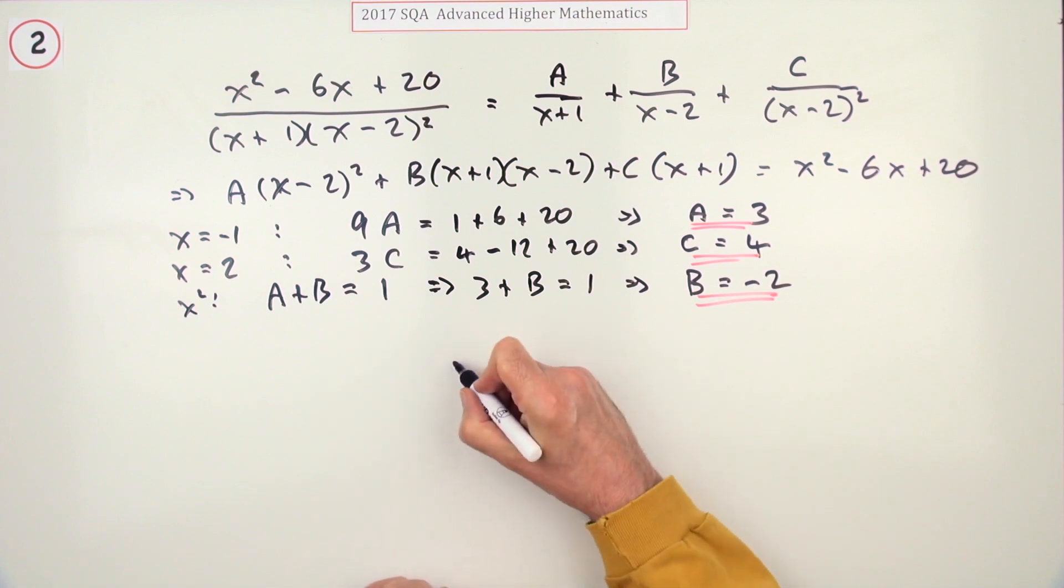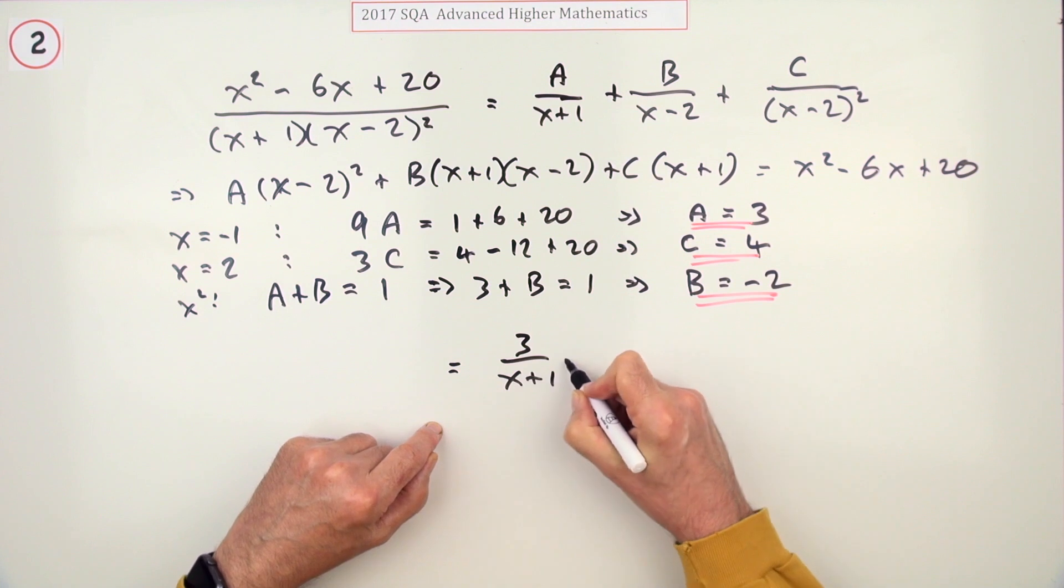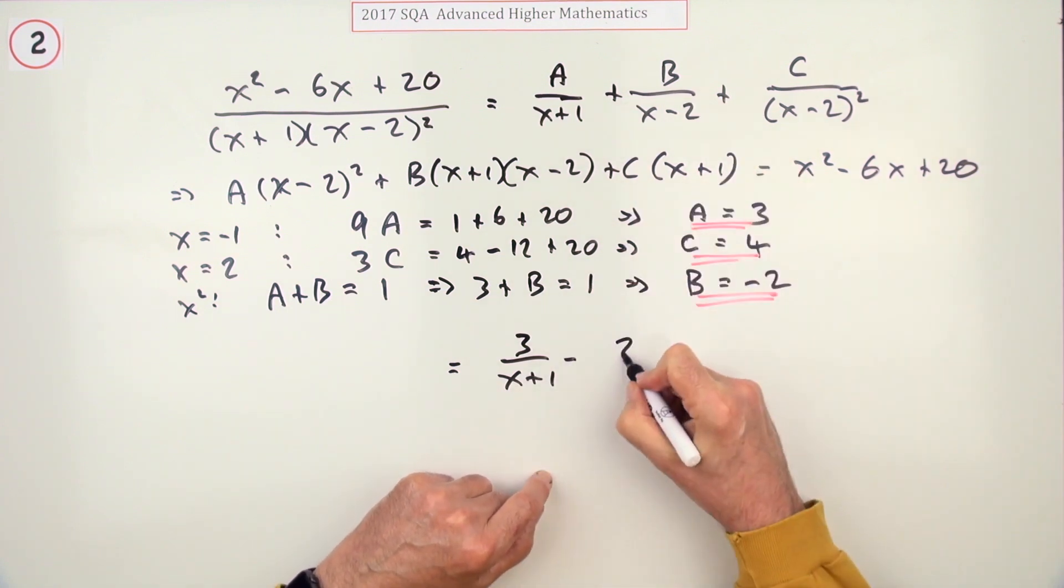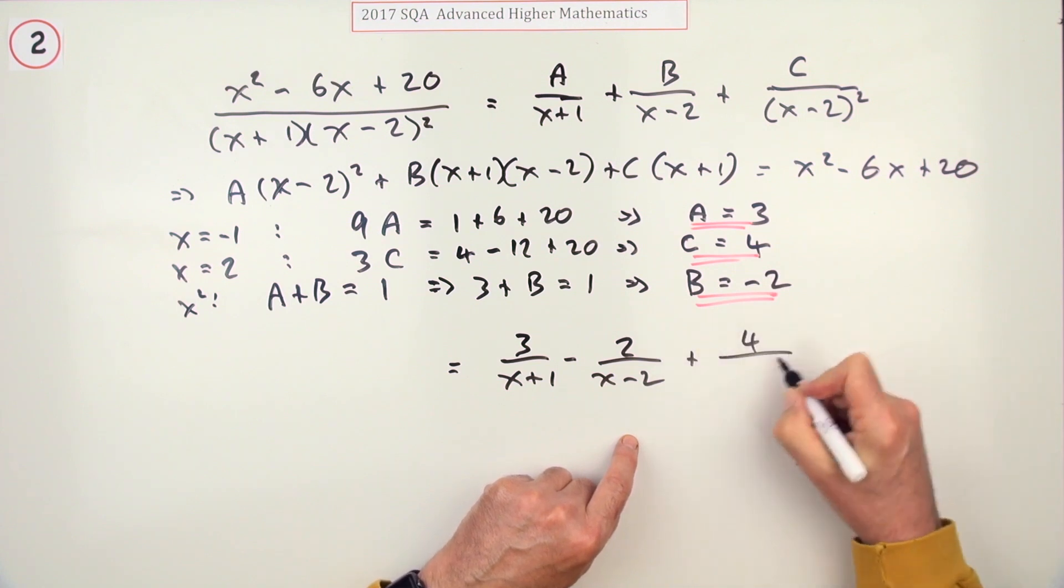Now it's just a case of putting it all together. So we've got 3 over (x+1), minus 2 over (x-2), plus 4 over (x-2)².